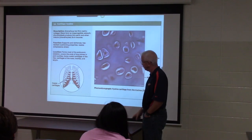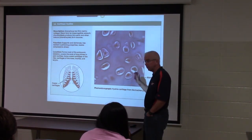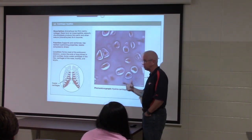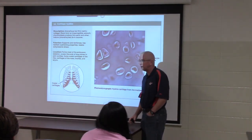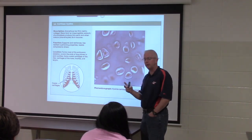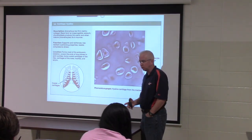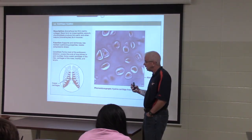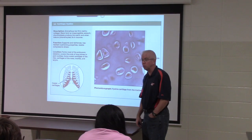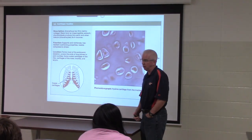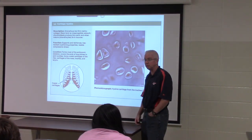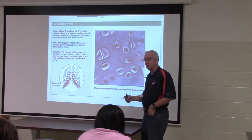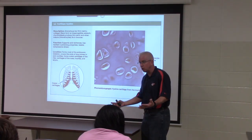Hyaline cartilage forms most of the embryonic skeleton. Bone is made in two primary ways; the first is endochondral ossification, the main process by which long bones are formed. This process begins with hyaline cartilage models. Long bones - the humerus, radius, ulna, carpals, phalanges, metacarpals, femur, tibia, fibula, tarsals, metatarsals - are made out of hyaline cartilage models.